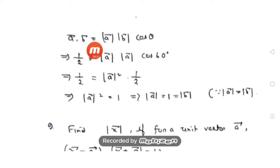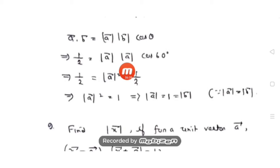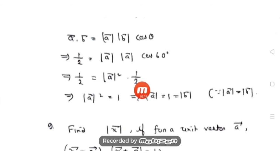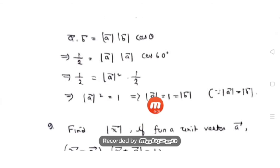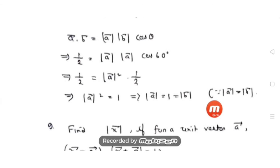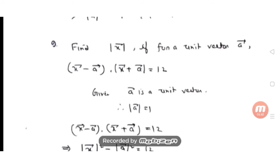Using the dot product formula: a·b = |a||b|cosθ. Substituting a·b = 1/2, |b| = |a|, and θ = 60°: 1/2 = |a|² × cos60° = |a|² × 1/2. So |a|² = 1, giving |a| = 1. Therefore |a| = |b| = 1.